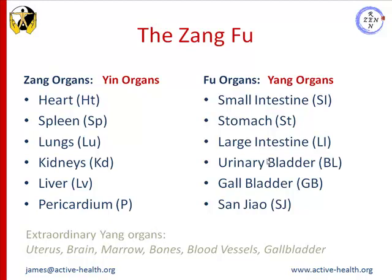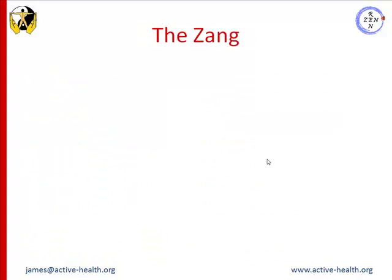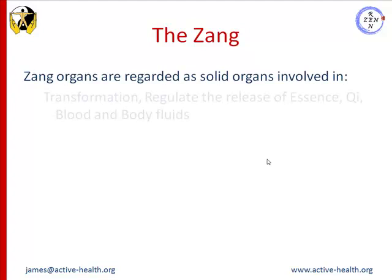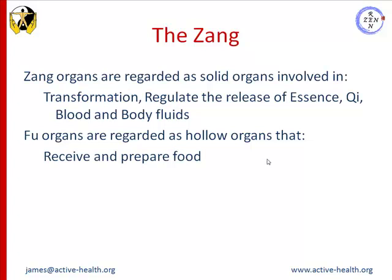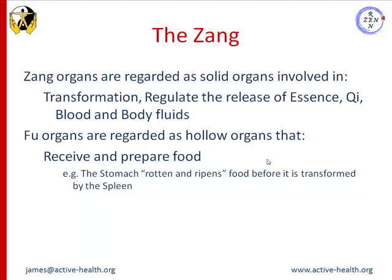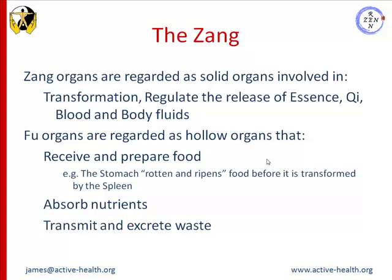We also have extraordinary Yang organs such as the uterus, brain, marrow, bones, blood vessels and gallbladder. However, we will look at that much later on in the course. The Zang are regarded as solid organs. They are involved in transformation and they regulate the release of essence, qi, blood and body fluids. They also store these vital substances when needed. The Fu organs are regarded as hollow organs and they receive and prepare food — such as when the stomach rottens and ripens food before it is transformed by the spleen. They absorb nutrients and also transmit and excrete waste.